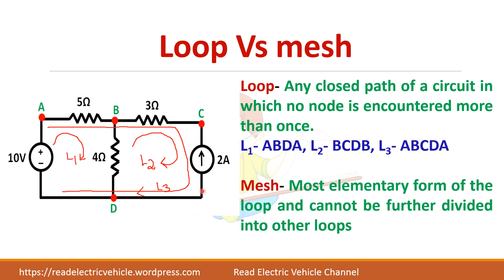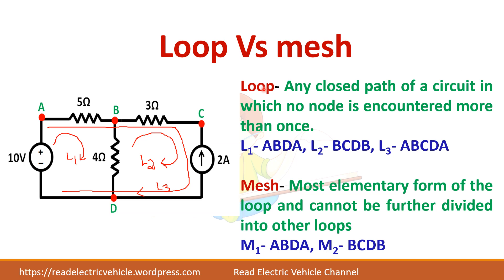A mesh cannot be further divided. L3 cannot be considered a mesh because it is not the smallest form of a loop. There are only two meshes here — L1 and L2 are meshes, whereas L3 is not a mesh because it can be easily divided. So there are two meshes and three loops in this circuit. This is important because some problems require mesh analysis.